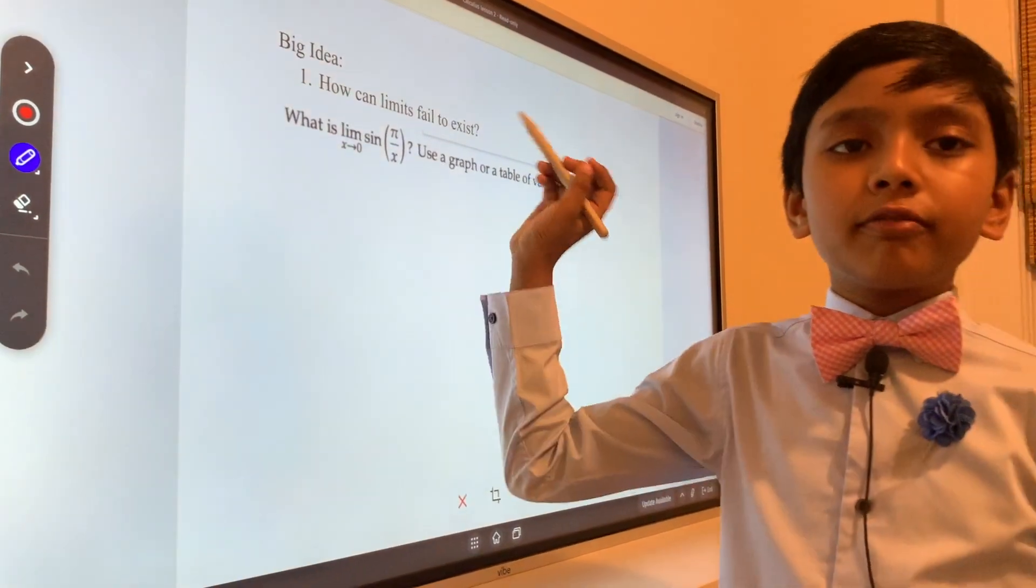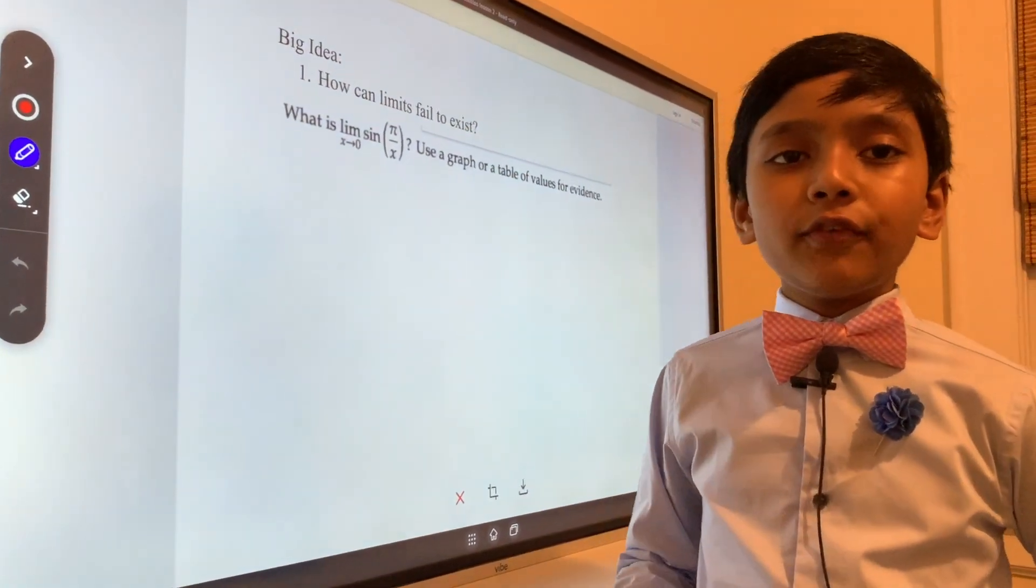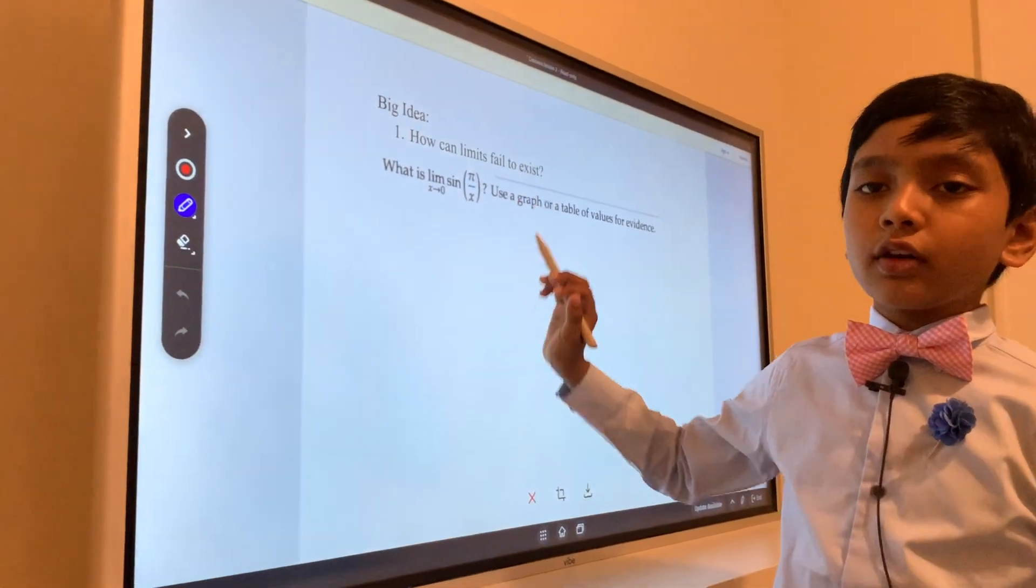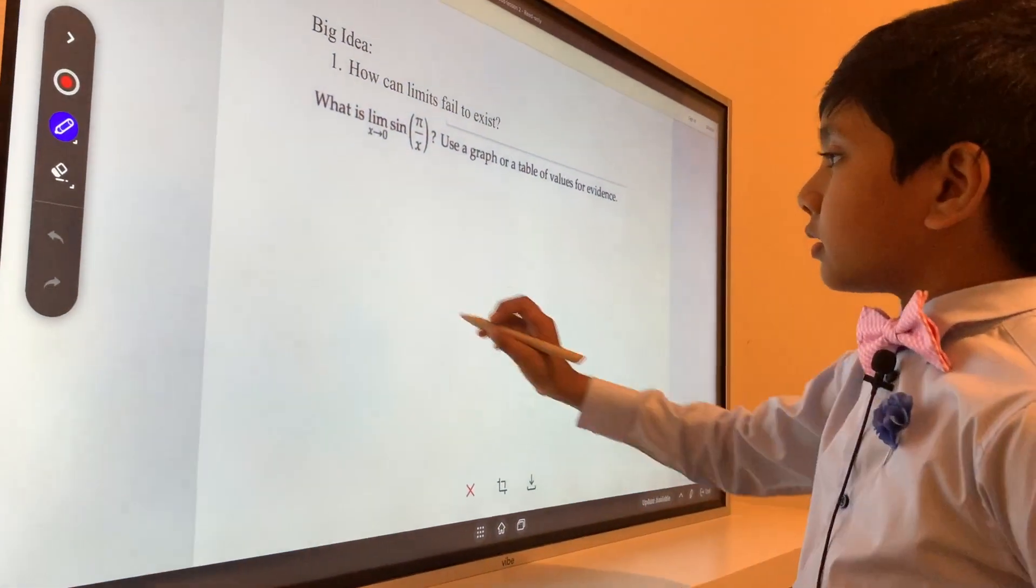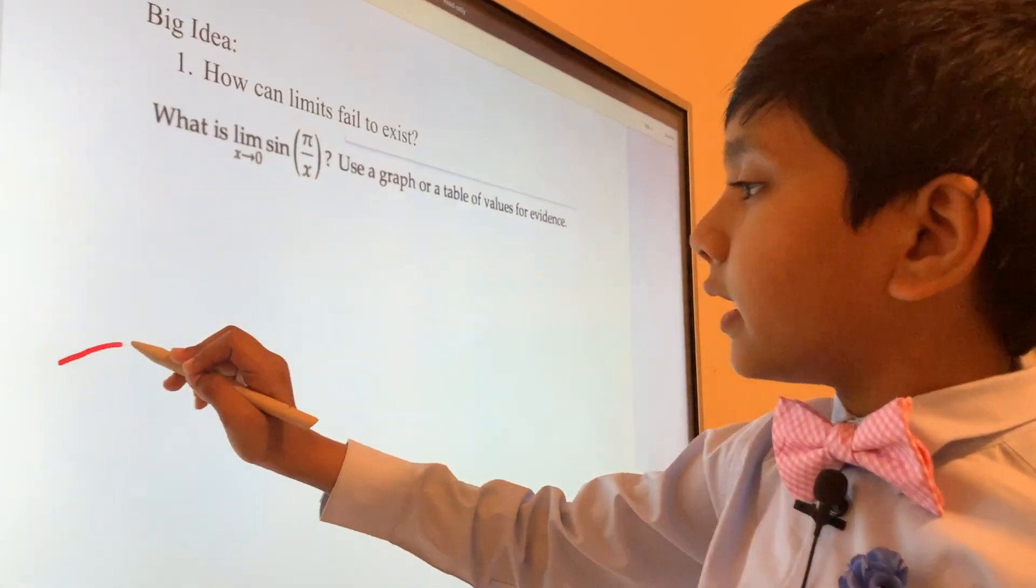We have a graph sine of pi over x. We want to find the limit as x goes to zero.